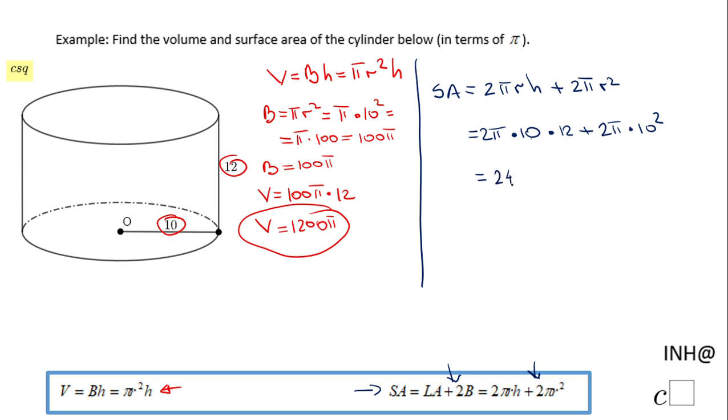That's 240π. And for the next part we have 10² which is 100 times 2, that will be 200π. So the final answer in this case will be 440π. So the surface area is 440π square units.